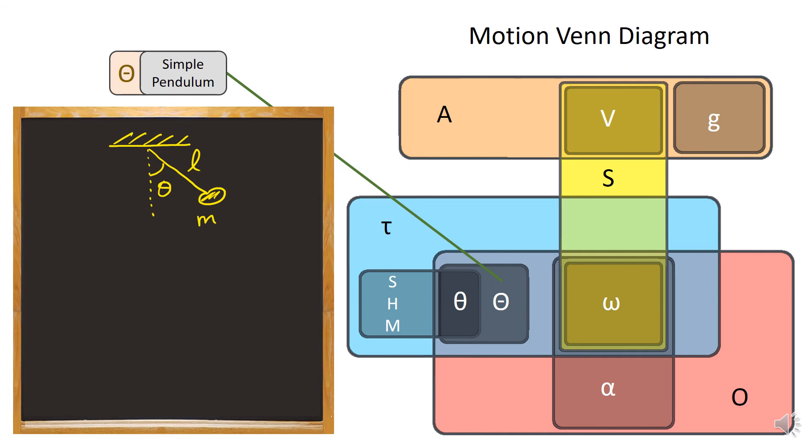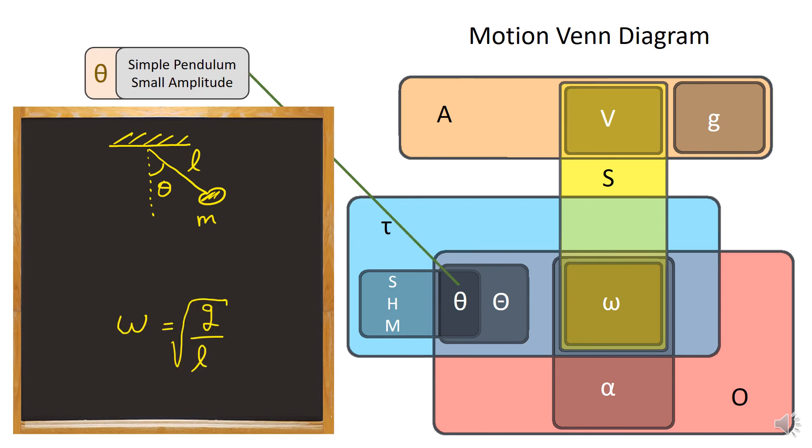We also have a simple pendulum, which is a type of periodic motion, also circular motion, where you have a mass at the end of a length of string, swinging back and forth through an angle theta. But in the small amplitude case, that is, if theta max is small, it's almost as if the mass is just going left and right. And actually in that limit of small amplitude, it's also simple harmonic, with the angular frequency being the square root of g over the length of the string.